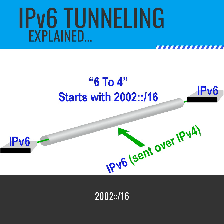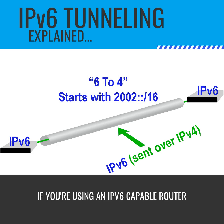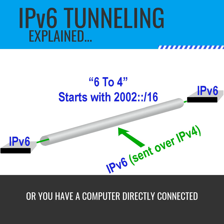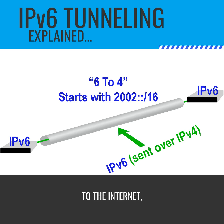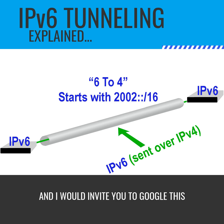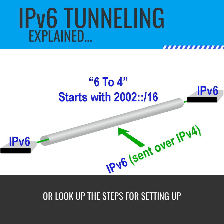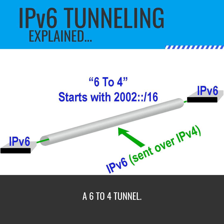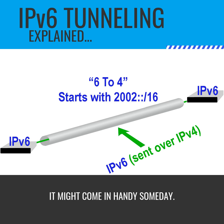A 6to4 address will always start with 2002::/16. If you're using an IPv6-capable router or you have a computer directly connected to the internet, you can set up a 6to4 tunnel for use. I would invite you to Google this or look up the steps for setting up a 6to4 tunnel — it might come in handy someday.